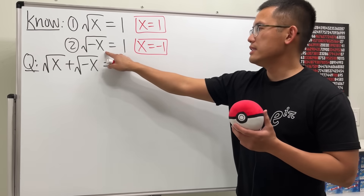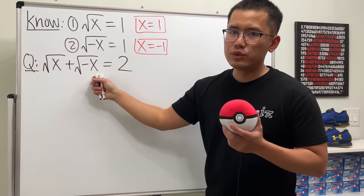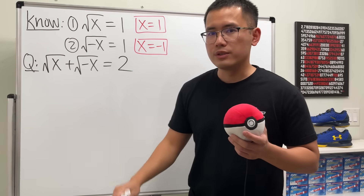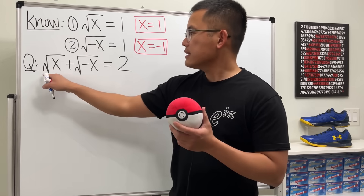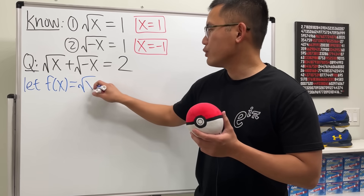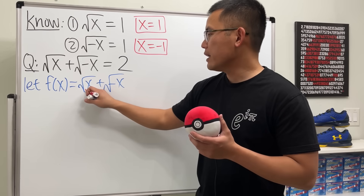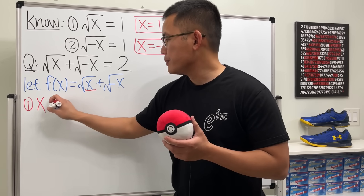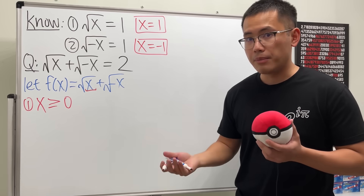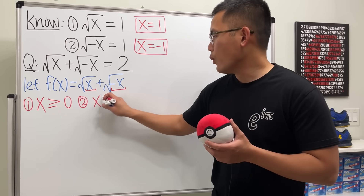This equation has a real solution, this equation also has a real solution, but what if we add them up and get √x + √(-x) = 2? Unfortunately, this equation does not have any real solutions anymore. Let's consider the left-hand side — call it f(x). Whenever we have a square root, we must ensure the inside is valid: x must be greater than or equal to zero, otherwise we get complex numbers. For the second term, -x must also be greater than or equal to zero.